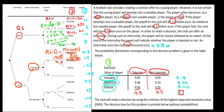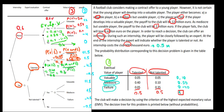Now we do the same logic for the probability of having a mediocre player given that he is talented. That's the probability of having a mediocre player and being talented, divided by the probability of being talented. The probability of being mediocre and talented is 0.40. So that would be 0.40 divided by 0.5, giving us a probability of 0.8.